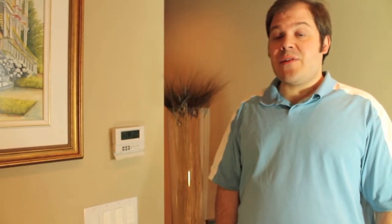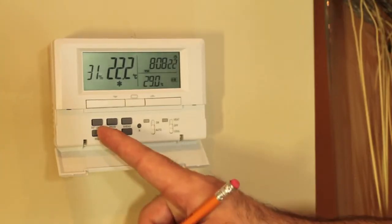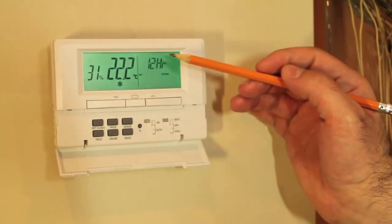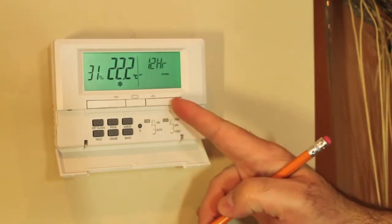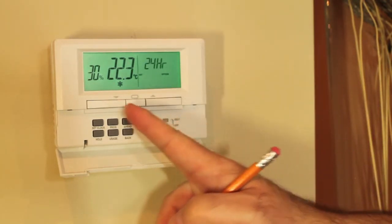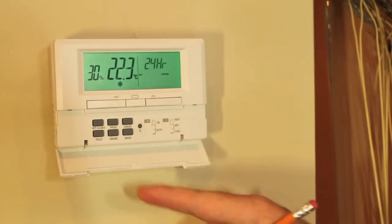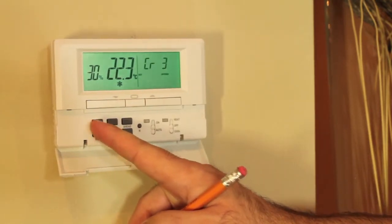By holding in the set clock button on the M6007 you will access the optional settings. The first to appear is the 12 or 24 hour clock option. 12 hour flashes on the screen. Pressing up or down will select between the 12 or 24 hour clock display. Pressing set clock again will take you to the next option.